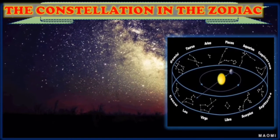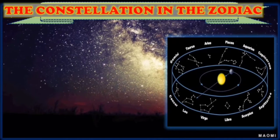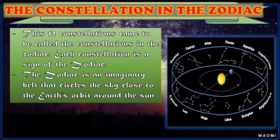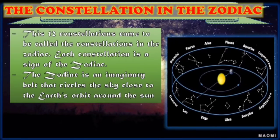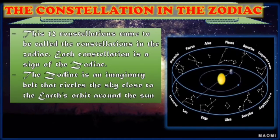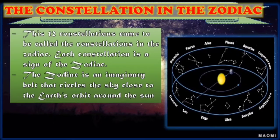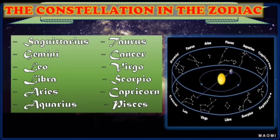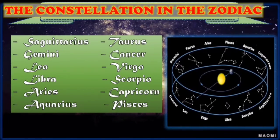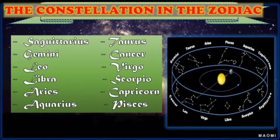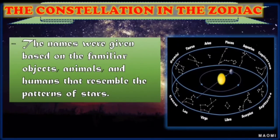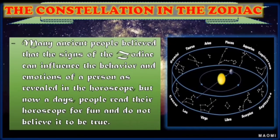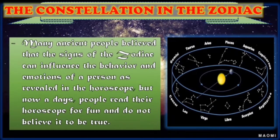About 2,000 years ago, some astronomers observed that the sun would appear to move across the sky, entering a different constellation each month. With this, 12 constellations came to be called the constellations of the Zodiac. Each constellation is a sign of the Zodiac, which is an imaginary belt that circles the sky close to the plane of Earth's orbit around the sun. The 12 constellations in the Zodiac are: Sagittarius, Taurus, Gemini, Cancer, Leo, Virgo, Libra, Scorpio, Aries, Capricorn, Aquarius, and Pisces. The names were given based on familiar objects, animals, and humans that resemble the patterns of stars. Many ancient people believed that the signs of the Zodiac can influence the behavior and emotions of a person, as revealed in the horoscope. But nowadays, people read their horoscope for fun and do not believe it to be true.